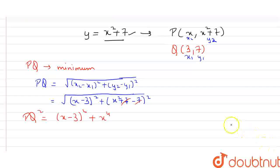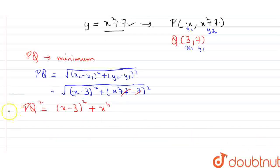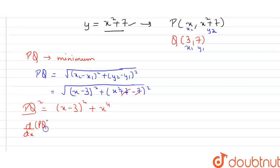Now for this PQ to be shortest we have to differentiate it and put it equal to 0 for the shortest value. Let's differentiate this PQ square for the minimum value. So d by dx of PQ square is 2 times (x minus 3), differentiation of x is 1 only, plus differentiation of x to the power 4 is 4x cube.